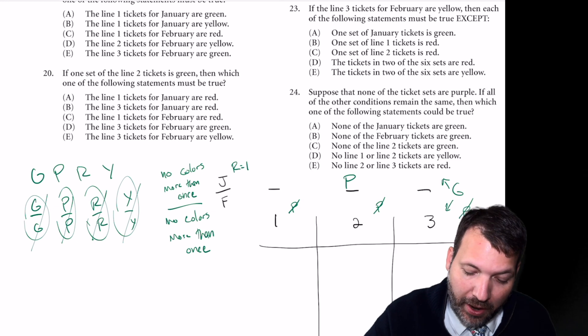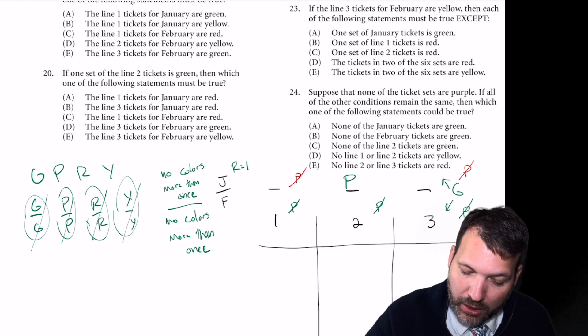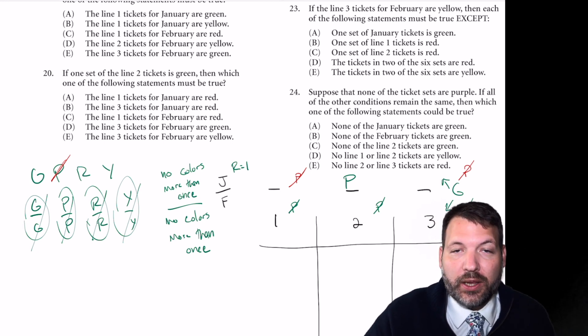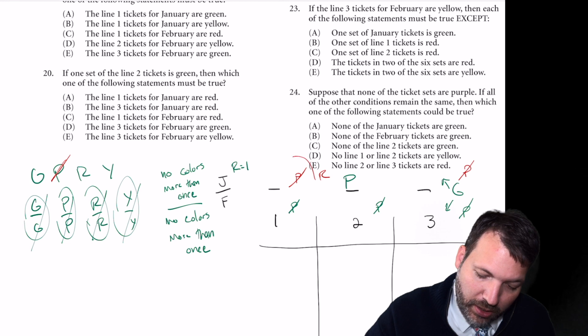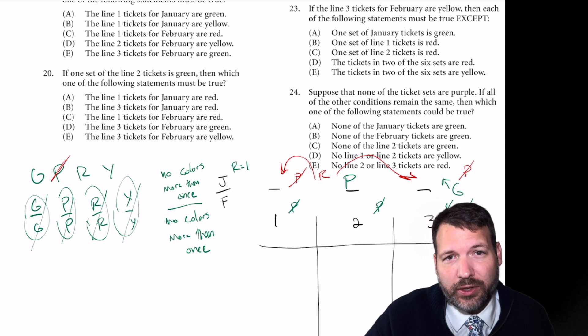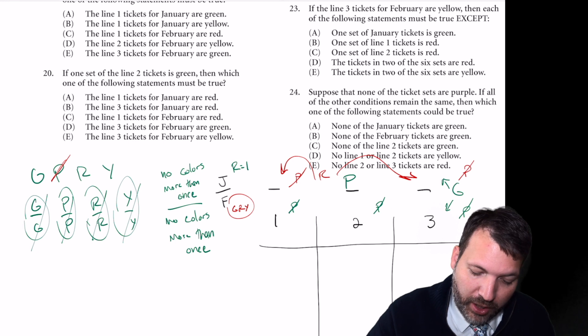What about our deductions? Sticking with purple for a second, if we can't use the colors more than once, line one also can't be purple in January, and line three also can't be purple in January. So actually purple is done. We're not going to use purple anymore. It only appears as the January line two color. I guess we could go ahead and say the red will either be line one for January or line three for January. I guess we could also go ahead and say that for February, since we can't use purple, it's going to be some arrangement of green, red, and yellow.